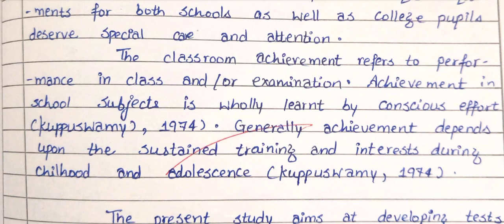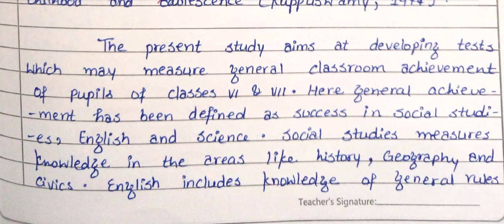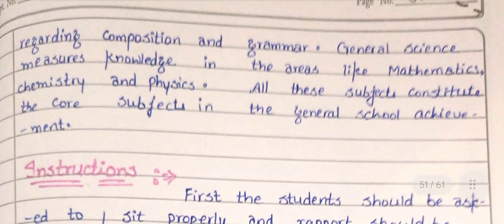Generally, achievement depends upon sustained training and interest during childhood and adolescence. The present study aims at developing tests which may measure general classroom achievement of pupils of class 6th to 8th. General achievement has been defined as success in social studies, English, and science. Social studies measures knowledge in areas like history, geography, and physics. English includes knowledge of general rules regarding composition and grammar. General science measures knowledge in areas like mathematics, chemistry, and physics. All these subjects constitute the core subjects in general school achievement.